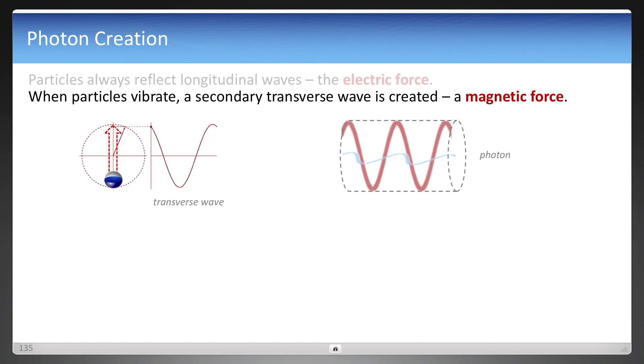But also if a particle vibrates, a secondary transverse wave is created while it's vibrating. It's a traveling wave, and if you were to capture that in time, now it's the photon. It's merged with the longitudinal wave and the transverse component, which is the magnetic force.